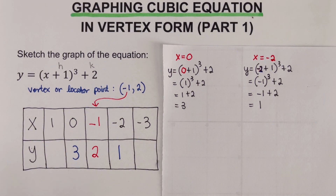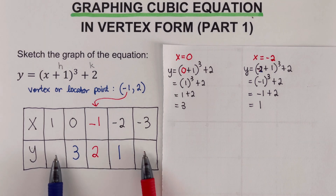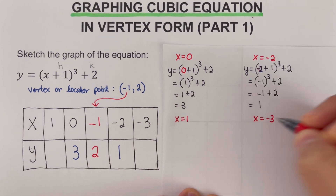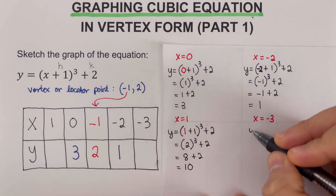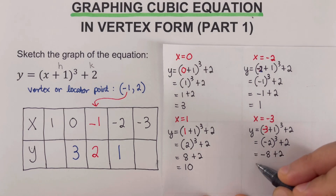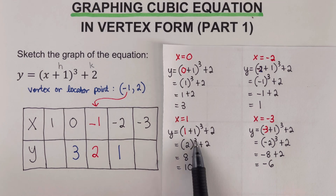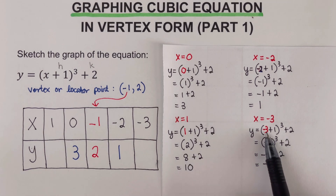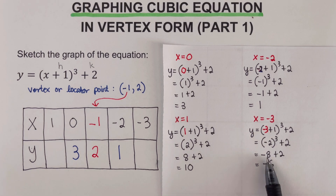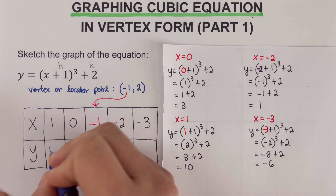Now we determine y when x is 1 and when x is negative 3. When x is 1: 1 plus 1 is 2, and 2 cubed means 2 times 2 times 2, which is 8, plus 2 is 10. When x is negative 3: negative 3 plus 1 is negative 2. Negative 2 times negative 2 times negative 2 is negative 8. Negative 8 plus 2 is negative 6. So those two y values are 10 and negative 6.